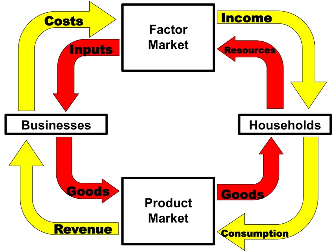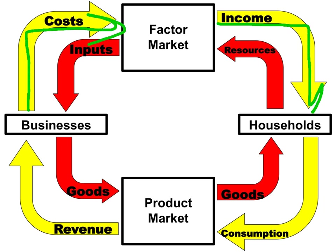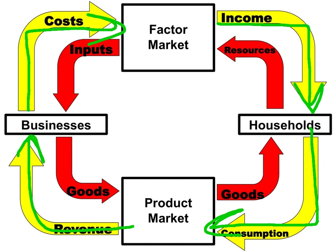You might have noticed that in this depiction of the circular flow model, the monetary payments flow in a clockwise direction. Businesses are paying costs in the factor market for resources; that becomes income to the households. The households take that hard-earned income and pay for goods and services in the product market, and now the businesses have revenue. Non-monetary flows are going in a counter-clockwise direction.